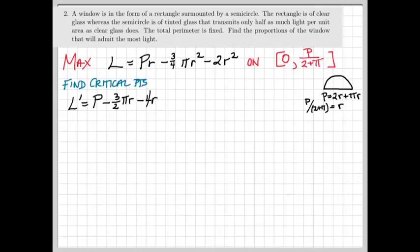Set the derivative equal to zero to solve for the critical points. This will give us P = (3π/2 + 4)R. Dividing both sides by the coefficient of R, we will see that R equals P divided by the quantity (3π + 8)/2. And we can simplify the compound fraction by multiplying by its reciprocal to finally give us that R is 2P/(3π + 8).